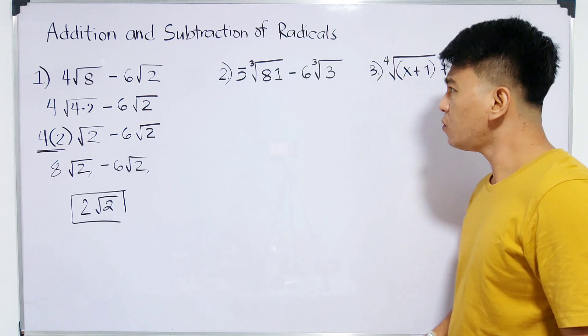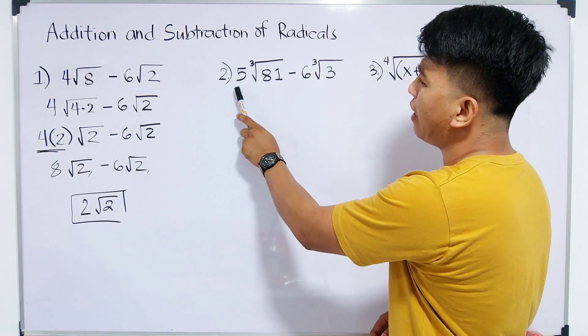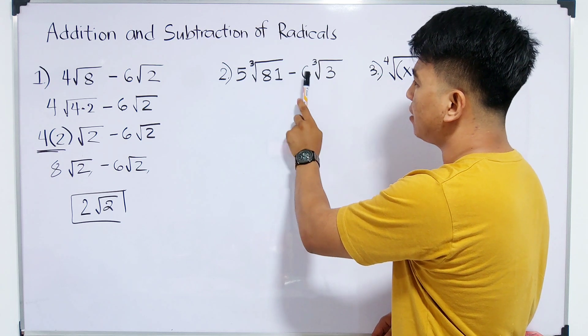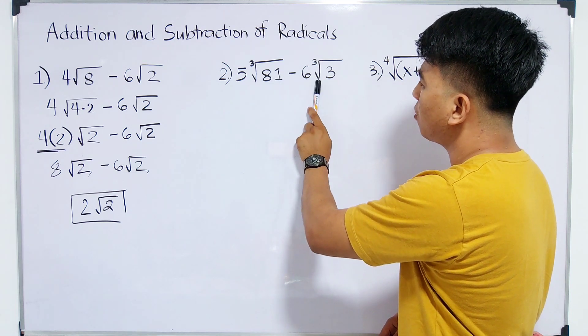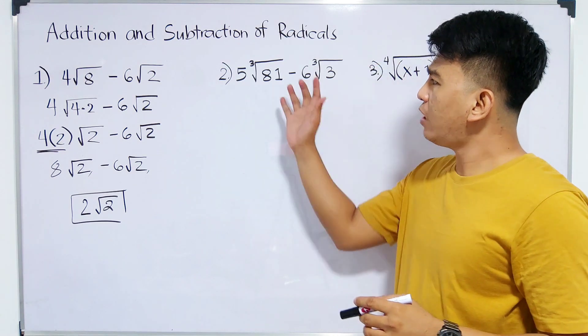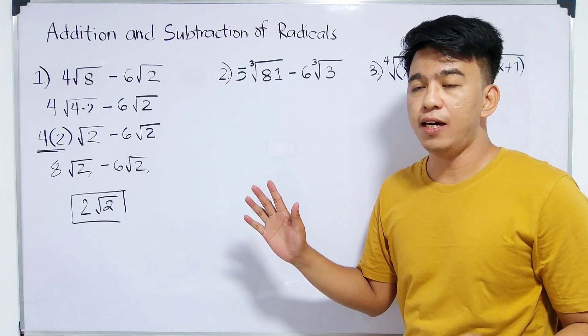Now, let's continue. For number 2, we are given 5 times the cube root of 81 minus 6 times the cube root of 3. So here, our 81 is not a perfect cube.